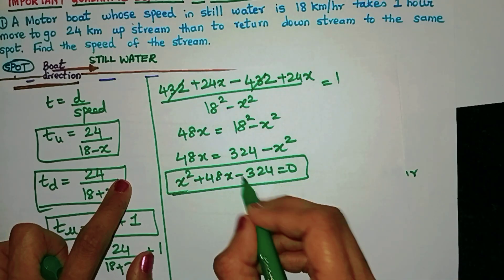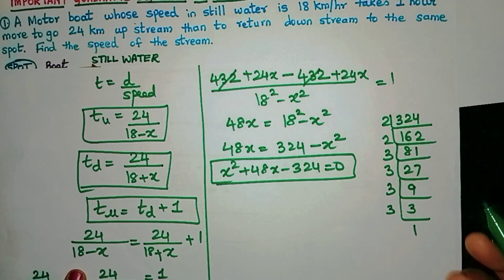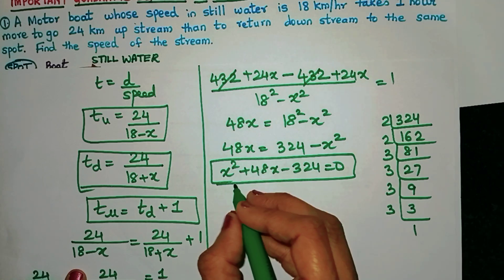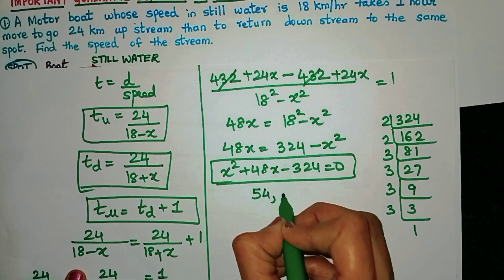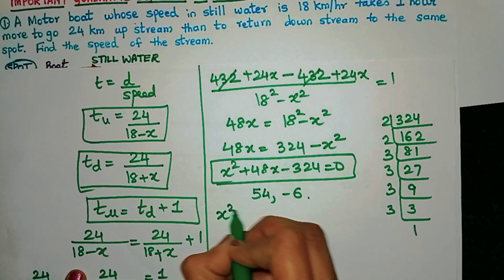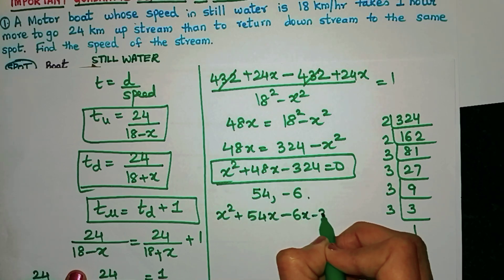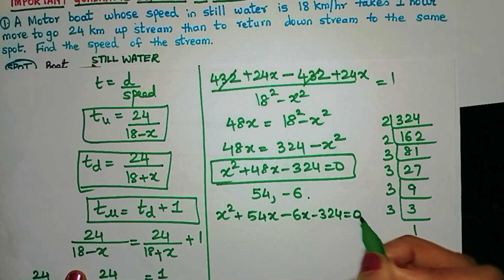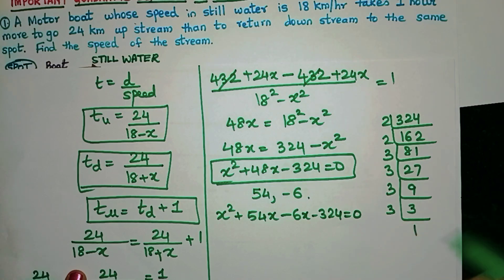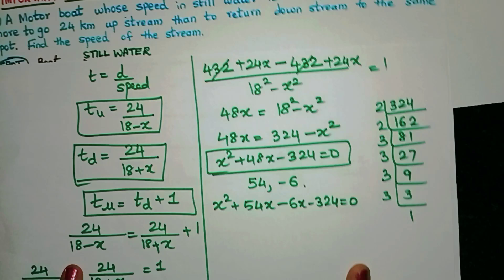For that, I need to find the factors of 324. I prime factorized it and we get the two factors as 54 and minus 6. So now I will get x² + 54x - 6x - 324 = 0. Finding the factors is something that you will get as you practice more and more quadratic equations.